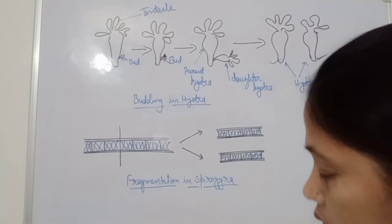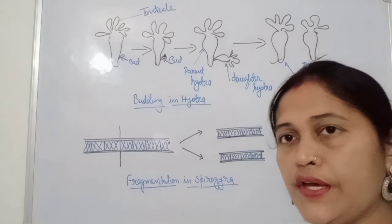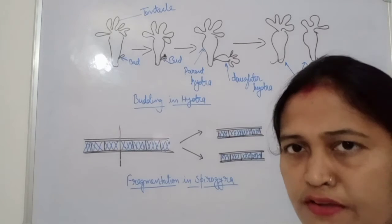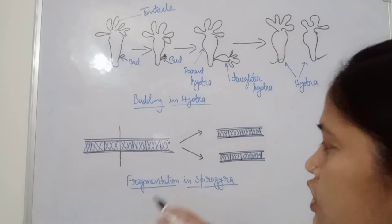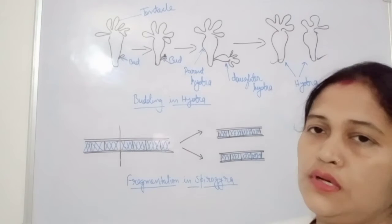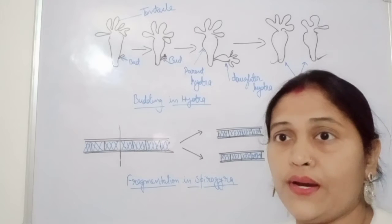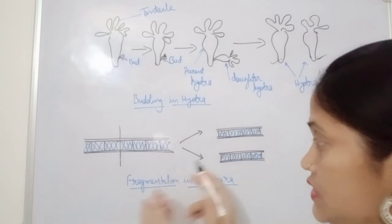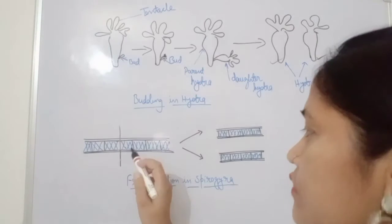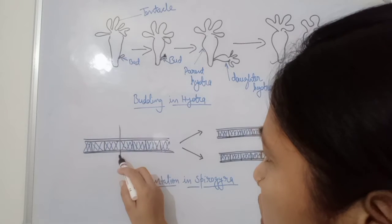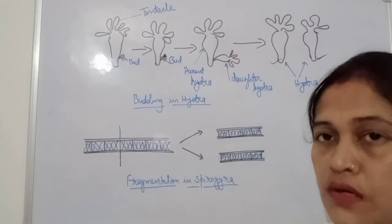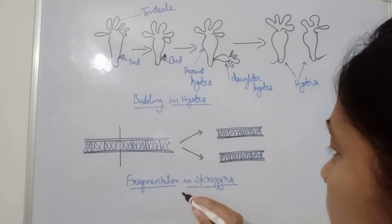Fragmentation in Spirogyra: Spirogyra is a filamentous green alga commonly present in ponds and rivers. In fragmentation, the body is divided into two or more parts — each part is known as a fragment — and each fragment gives rise to a new Spirogyra. You can see in the diagram that Spirogyra splits from the middle, forming two new Spirogyra that are independent of each other.